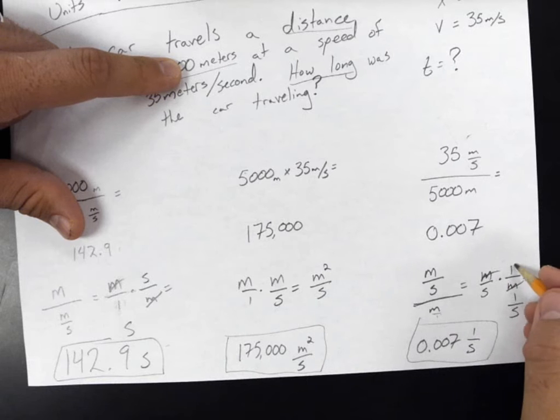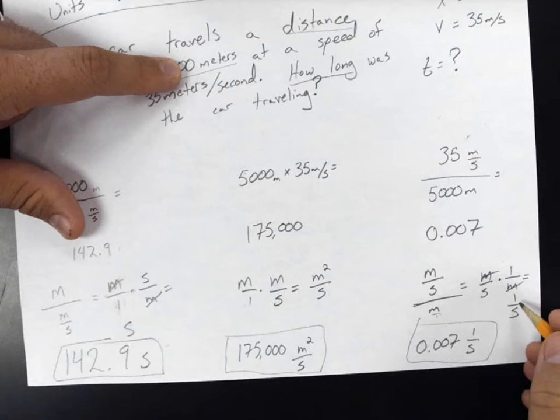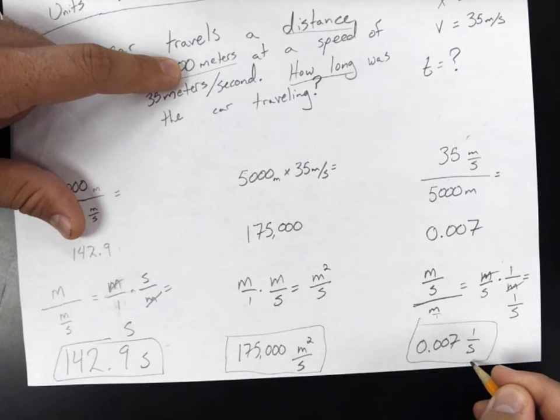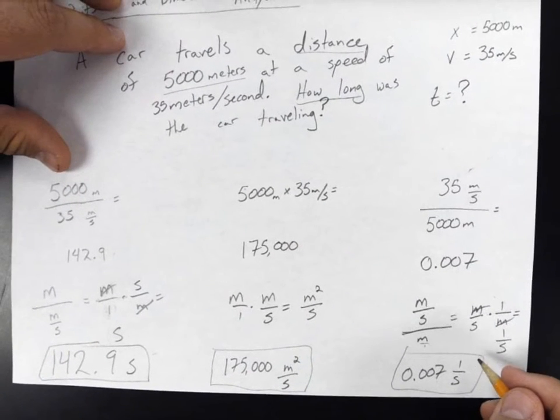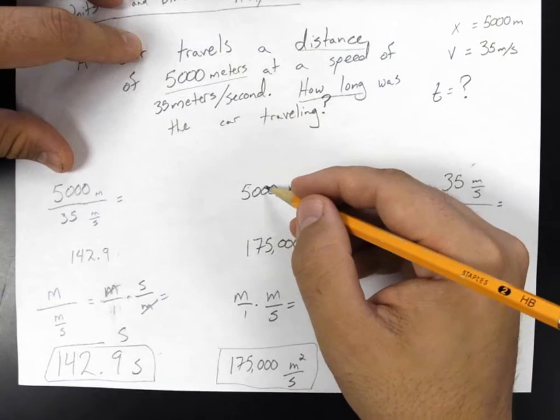And that leaves you with this unit right here, 1 over seconds. So we've got 0.007 per second. Now, I am no Einstein, but it doesn't sound like per second is a unit of time.